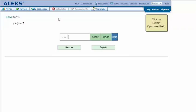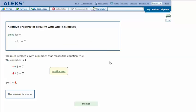Here's an example problem. Solve for V: V plus 3 equals 7. Let's click Explain. We must replace V with a number that makes the equation true. The number is 4, because if you ask yourself what plus 3 is 7, well, 4 plus 3 is 7.